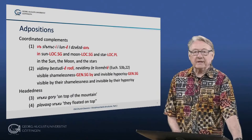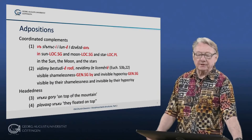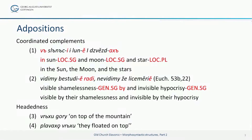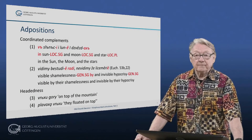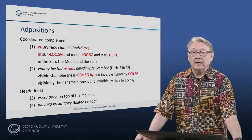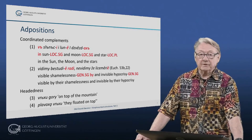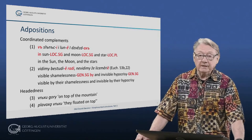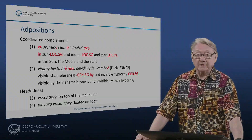One interesting thing about prepositions and postpositions is that when they govern conjoined nouns, they are often not repeated. In example two, you have the postposition radi, which governs both the preceding noun and the following noun in the genitive.